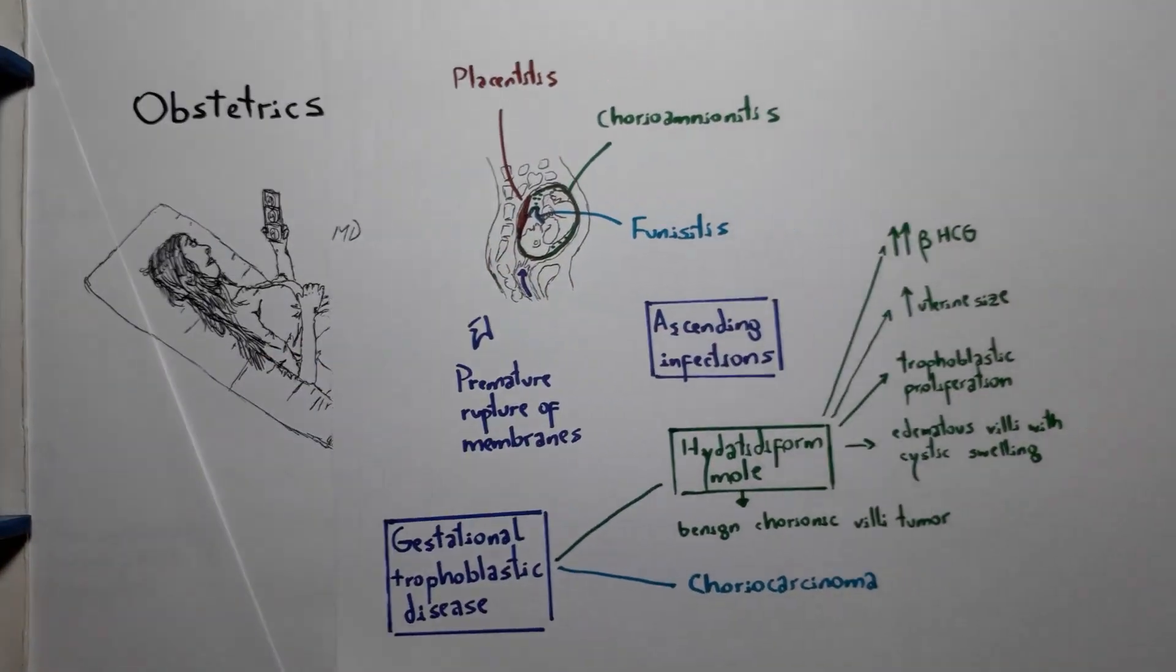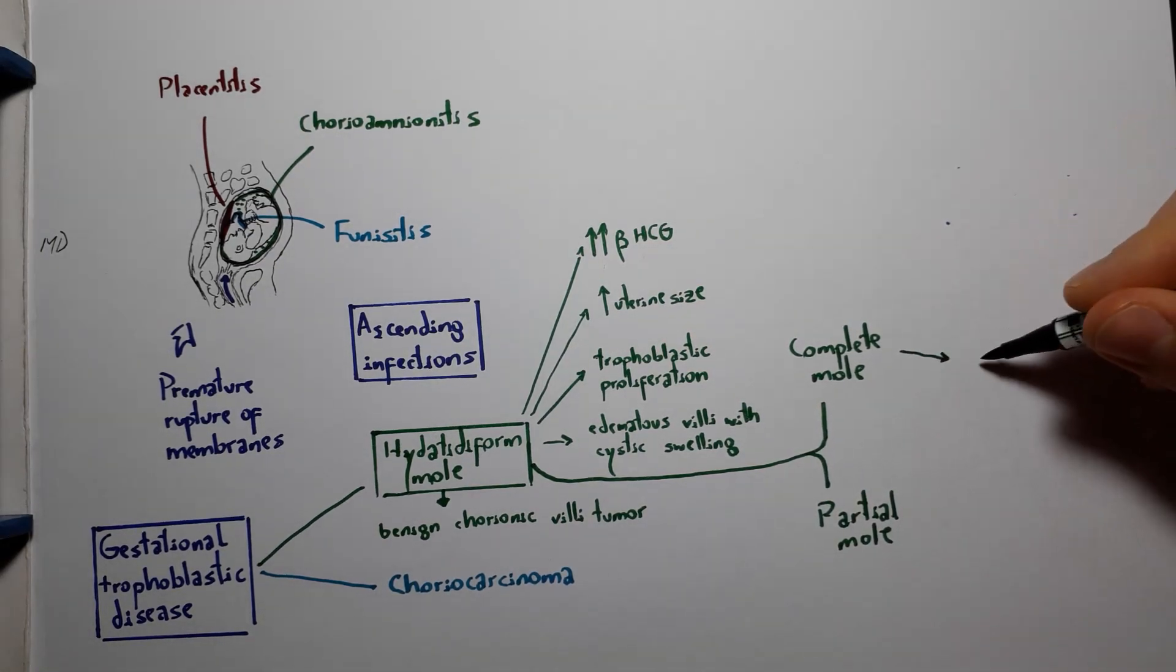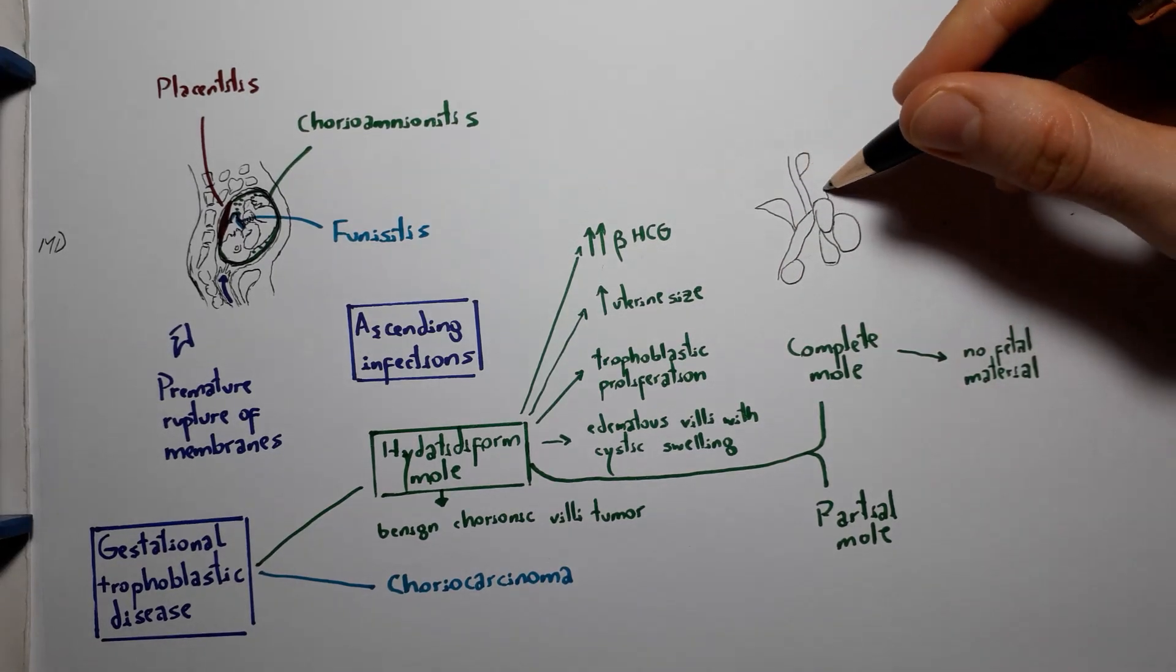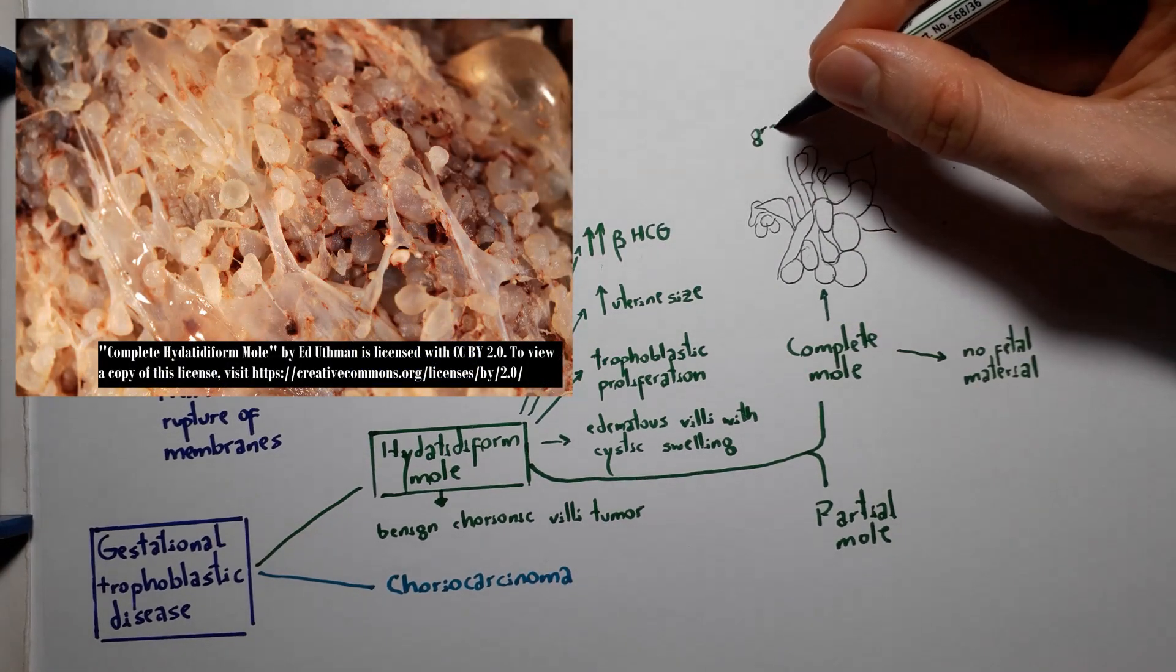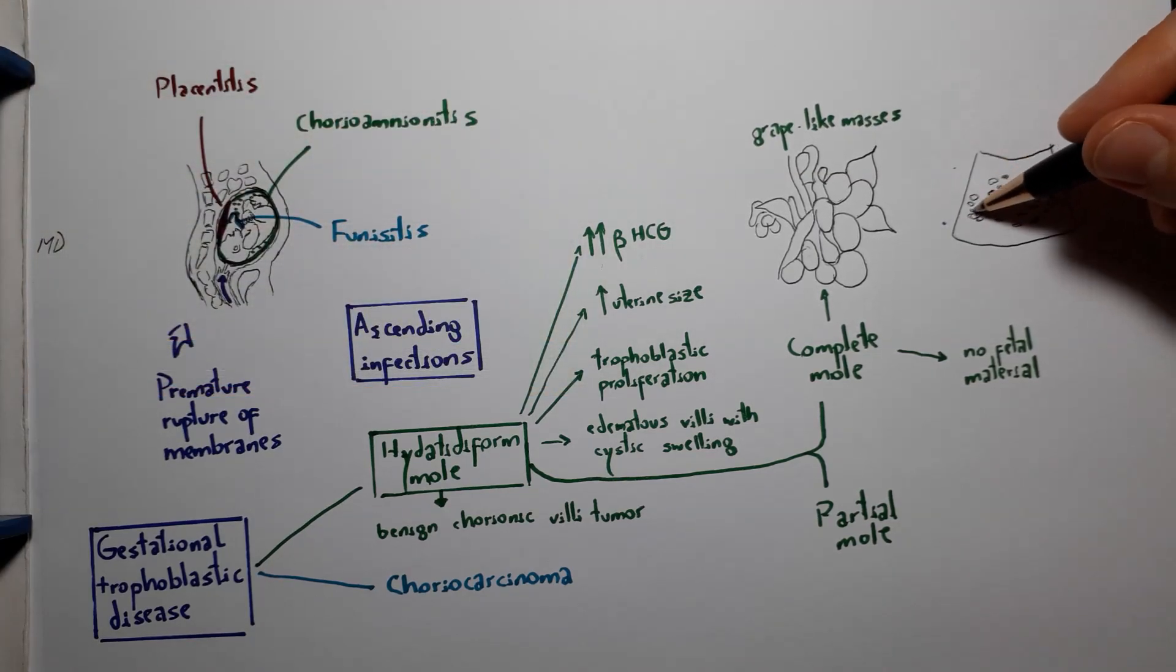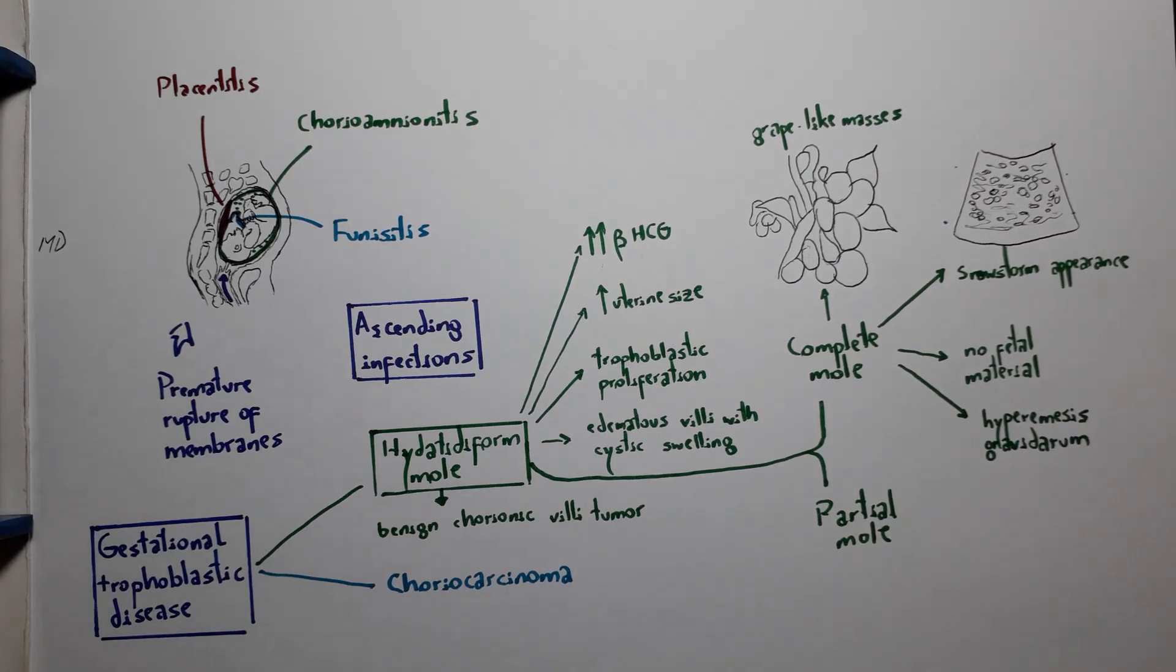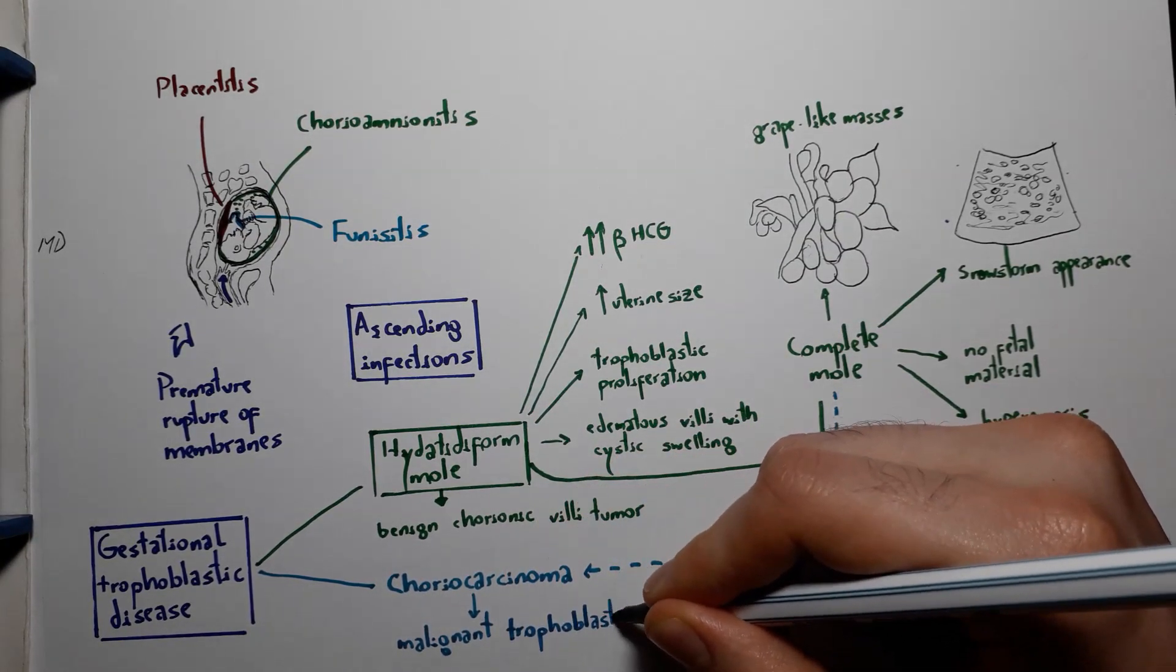Hydatidiform moles can be classified as complete, when there is no fetal material, or partial, when there is fetal material in addition to the benign proliferation of trophoblasts. The complete mole is characteristically described as grape-like masses or clusters of grapes on gross anatomy, honeycombed uterus on microscopy, and snowstorm pattern on ultrasound. Complete mole is also marked by the possible presence of hyperemesis gravidarum and the risk of transformation into choriocarcinoma, the malignant neoplasm of trophoblasts.